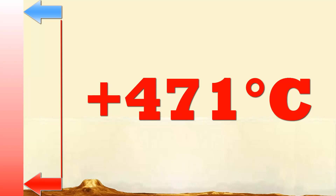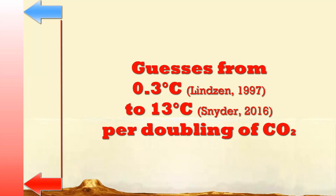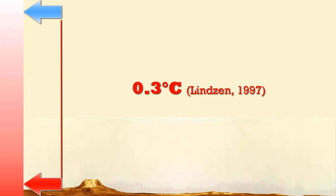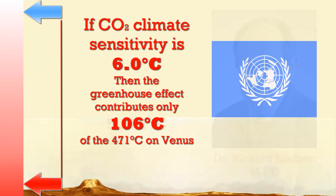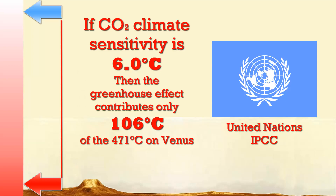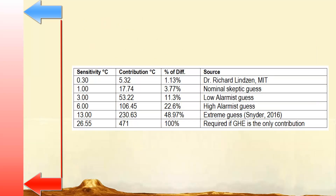From the top of the Venusian atmosphere to the surface, something is warming things up by about 471 degrees Celsius. So far, there is no way to test the greenhouse climate sensitivity — everyone on both sides of this debate are merely guessing. With a climate sensitivity of 0.3 degrees Celsius per doubling of CO2, suggested by Dr. Richard Lindzen of MIT, only 5.32 degrees Celsius of the surface temperature can be attributed to the greenhouse effect. If we go as high as 6 degrees Celsius per doubling of CO2, suggested by some extreme warming alarmists, only 106 degrees Celsius can be attributed to the greenhouse effect — still falling far short of the actual surface temperature.